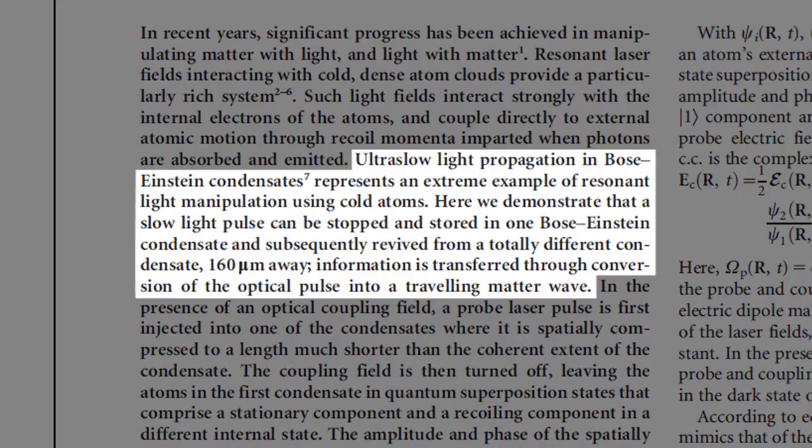Ultra-slow light propagation in Bose-Einstein condensates represent an extreme example of resonant light manipulation using cold atoms. Here, we demonstrate that a slow light pulse can be stopped and stored in one Bose-Einstein condensate, and subsequently revived from a totally different condensate 160 micrometers away. Information is transferred through conversion of the optical pulse into a traveling matter wave.